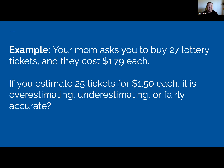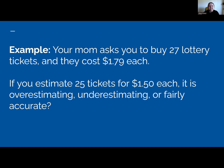Now the same question, but you estimate 25 tickets at $1.50 each. In this case, you rounded down from 27 to 25 and from $1.79 to $1.50 — you took both values and went lower. This is going to be an underestimation. Taking both values and rounding up was overestimating; taking both and rounding down is underestimating.